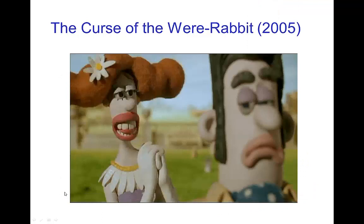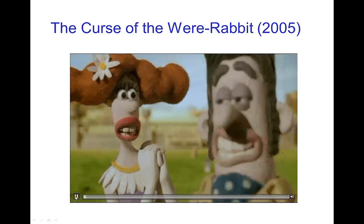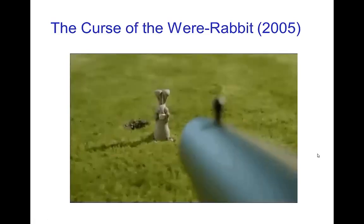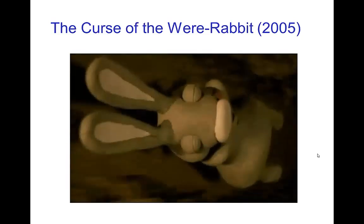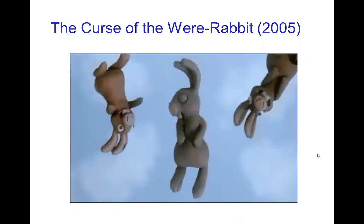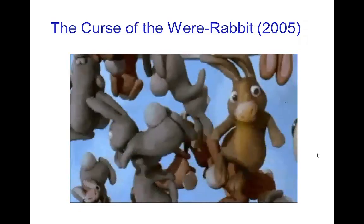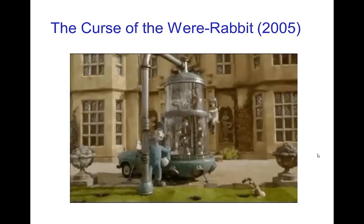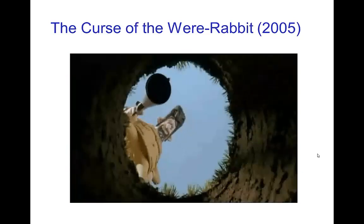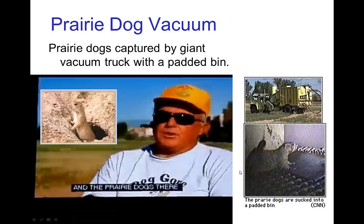Let's look at a related example of using pressure differences like this. In this case, a rabbit is drawn into a hole — it's moving — and at this point the rabbit has been pulled into a vacuum cleaner. Of course that seems absurd, but interestingly enough it's actually not only possible, but is used to capture prairie dogs. Let's look at a quick video of that.